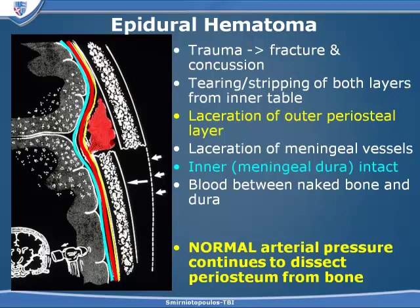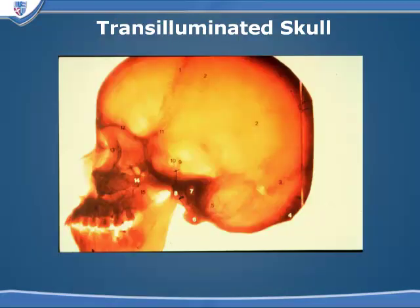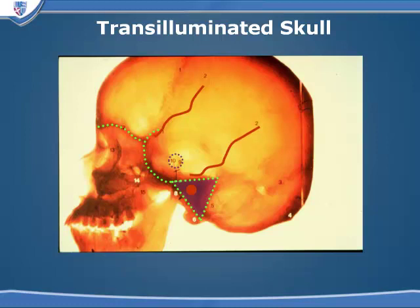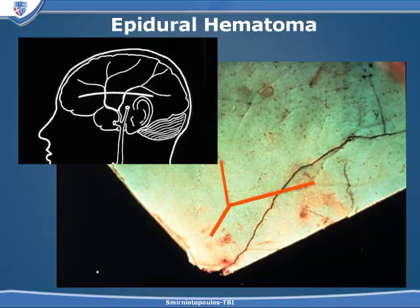Someone who is hypotensive or in shock may not have sufficient arterial pressure to allow the periosteum to be dissected off of the bone. Looking at a transilluminated skull, we can see the normal landmarks of the greater wing of the sphenoid, the orbital roof, and the petrous bone, and the lucencies created by pulsation of branches of the middle meningeal artery. When the fracture line crosses these grooves, it may lacerate the arteries. In this resected skull specimen, we can see the groove made by the meningeal artery and how the fracture crosses that vessel.